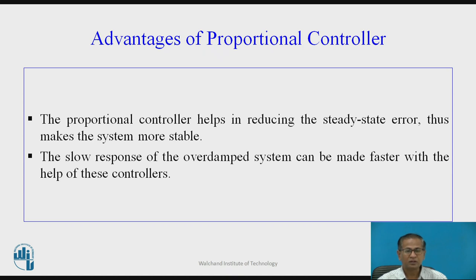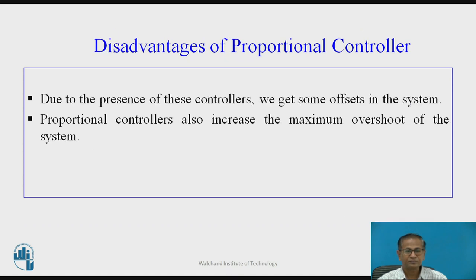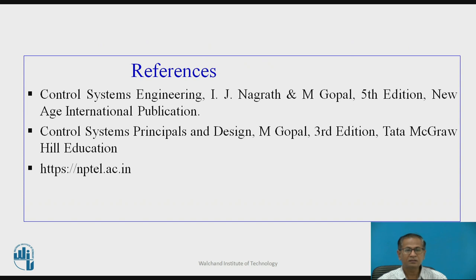Advantages of the proportional controller: the proportional controller helps in reducing the steady state error, thus making the system more stable. The slow response of the over-damped system can be made faster with the help of this controller. However, due to the presence of this controller, we get some offset in the system, and the proportional controller also increases the maximum overshoot of the system. These are the references. Thank you.